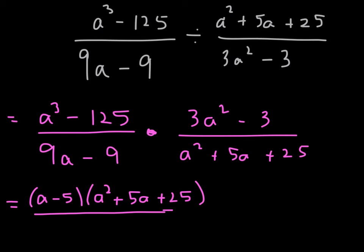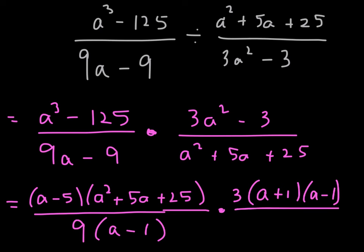Extend this fraction bar. The denominator, the GCF is 9 there. The numerator, you can factor out a 3. After you factor out a 3, you'll notice that you have a difference of two squares, which factors as such. The denominator is prime. It does not factor. I know that because there are no factors of 25 that add to 5.